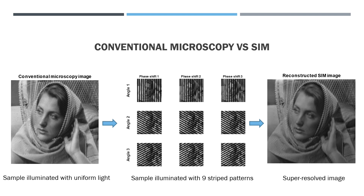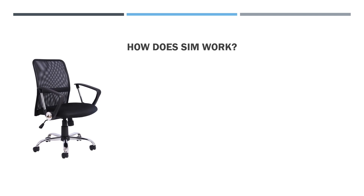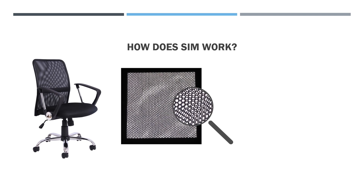These super-resolution methods are capable of overcoming the diffraction limit, and for this work the 2014 Nobel Prize in Chemistry was awarded. SIM is one of these techniques and can image at twice the resolution of a conventional microscope. As you can see in the figure below, on the left you have the image from a wide-field microscope and on the right the resolution is much better with SIM. Let me explain how SIM works.